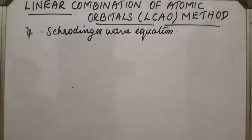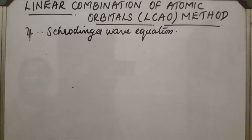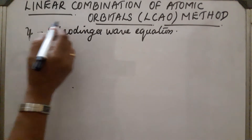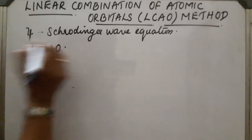Like atomic orbitals, the Schrödinger wave equation can also be applied to describe the behavior of electrons in molecules. But when the equation is applied to molecules, it becomes very complex. For the sake of convenience, researchers introduced an approximate method called the linear combination of atomic orbitals, or LCAO method.